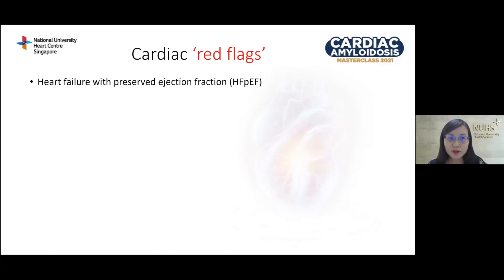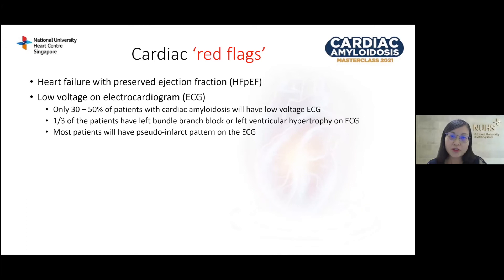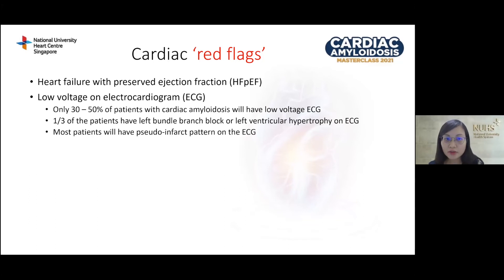These patients often present with heart failure with preserved ejection fraction; however, in advanced cases, systolic dysfunction can occur. On electrocardiogram, the classical description is low voltage, but only 30–50% of patients with cardiac amyloidosis will have low voltage ECG. In fact, one third will have left bundle branch block, left ventricular hypertrophy, or voltage criteria. Most patients will have a pseudoinfarct pattern — Q waves on ECG — but coronary angiogram does not reveal significant coronary artery disease.